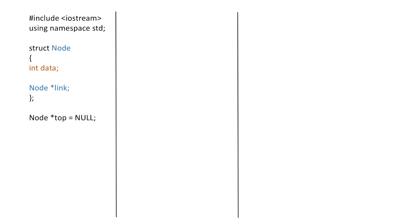Now one by one let's implement the various stack operations. Let's start with the isEmpty function, which returns true or false indicating whether the stack is empty or not. As we are implementing stack using linked list, we know that the linked list is empty when the top pointer is equal to null.